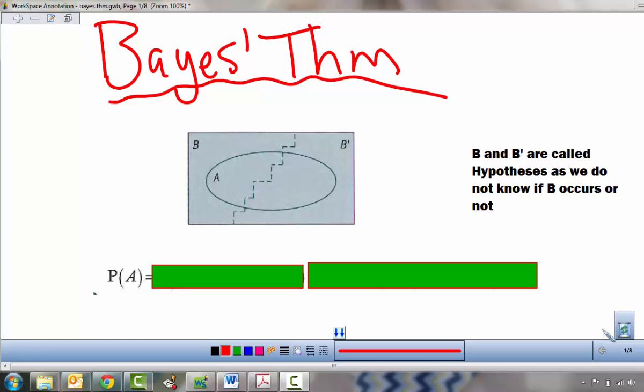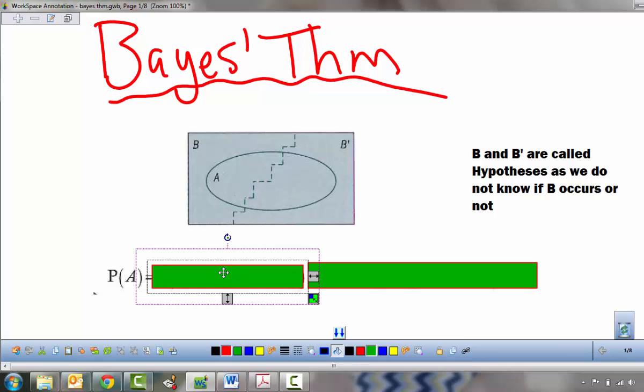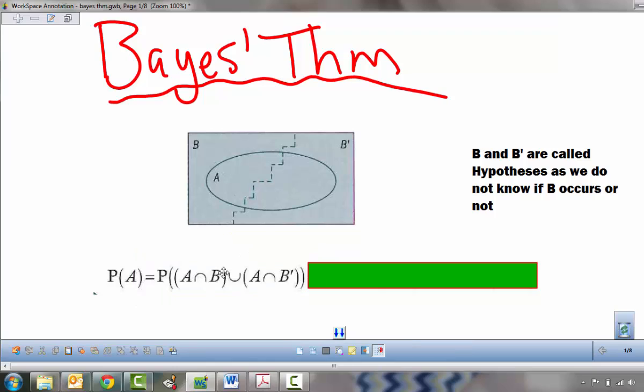So we have to talk about this thing called total probability. We have a Venn diagram here, we have event A, and sometimes event B happens and sometimes B doesn't happen. These are called hypotheses. And event A, the probability of event A, can be thought of as the probability of A intersect event B, so this part,